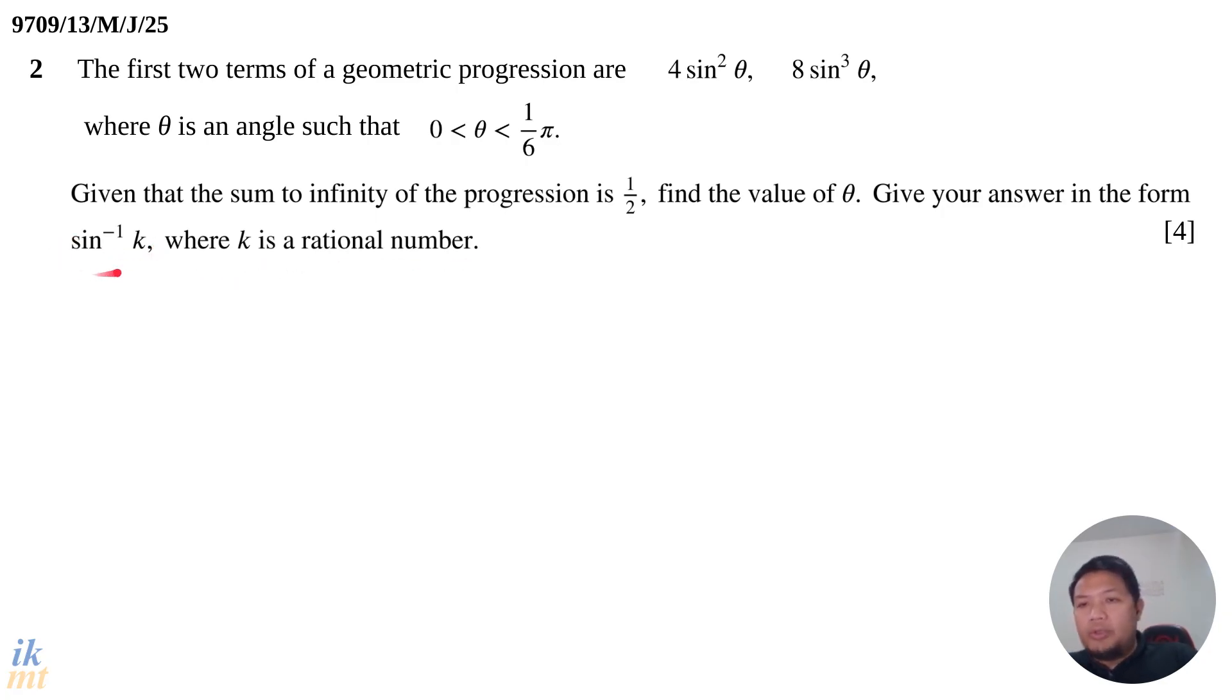One thing you can notice is that since the answer must be in the form sin⁻¹k, our aim is to get our equation to be sin θ equals a number. Because after that, θ will be sin⁻¹ of that number. This will happen because both terms here are in sin θ.